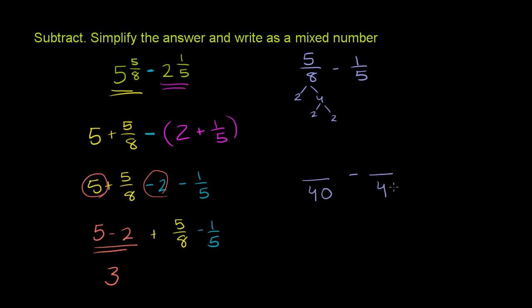Now to go from 8 to 40, you have to multiply by 5. Then we have to do the same thing to the numerator. If we multiplied 8 times 5, you have to multiply 5 times 5 to get 25. So in either case, we're multiplying times 5, the numerator and the denominator.